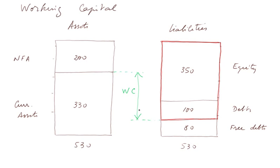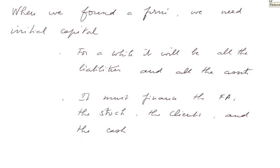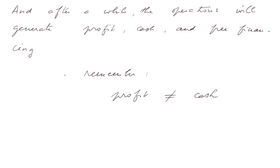When we found a firm, we need initial capital. And for a while, it will be all the liabilities and therefore also all the assets. Therefore, it must finance the fixed assets, the stock, the clients, and the cash at first. And after a while, the operations will generate profit, cash, and free financing, the free debt as we saw. And remember, profit is not cash. And we may make a profit but have no cash or see our cash go down. And conversely, we can make a loss and have plenty of cash and even see our cash go up.